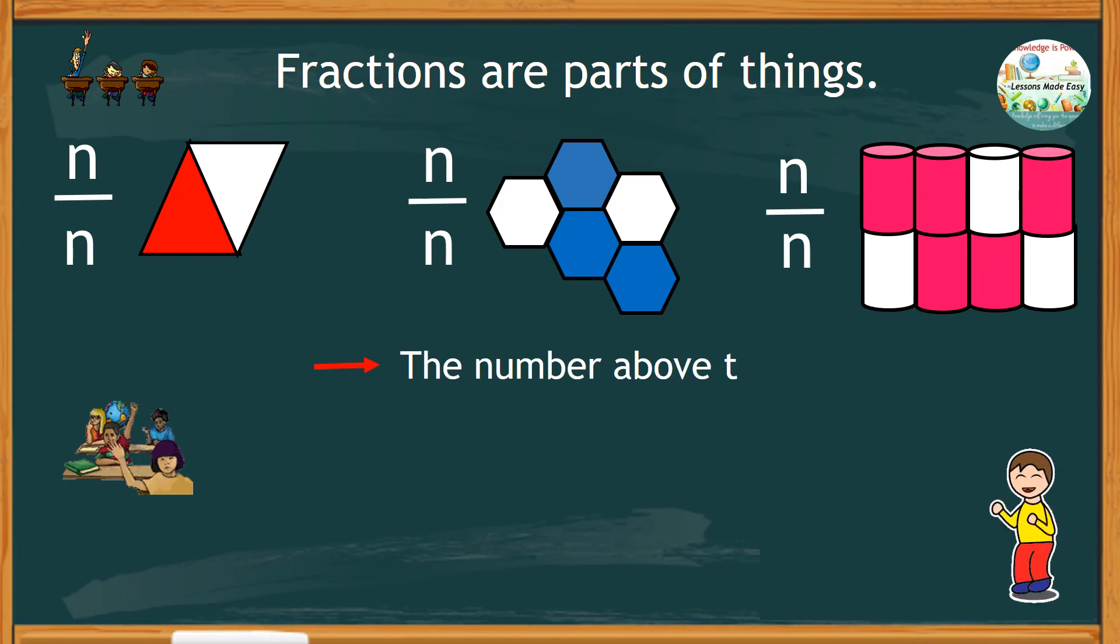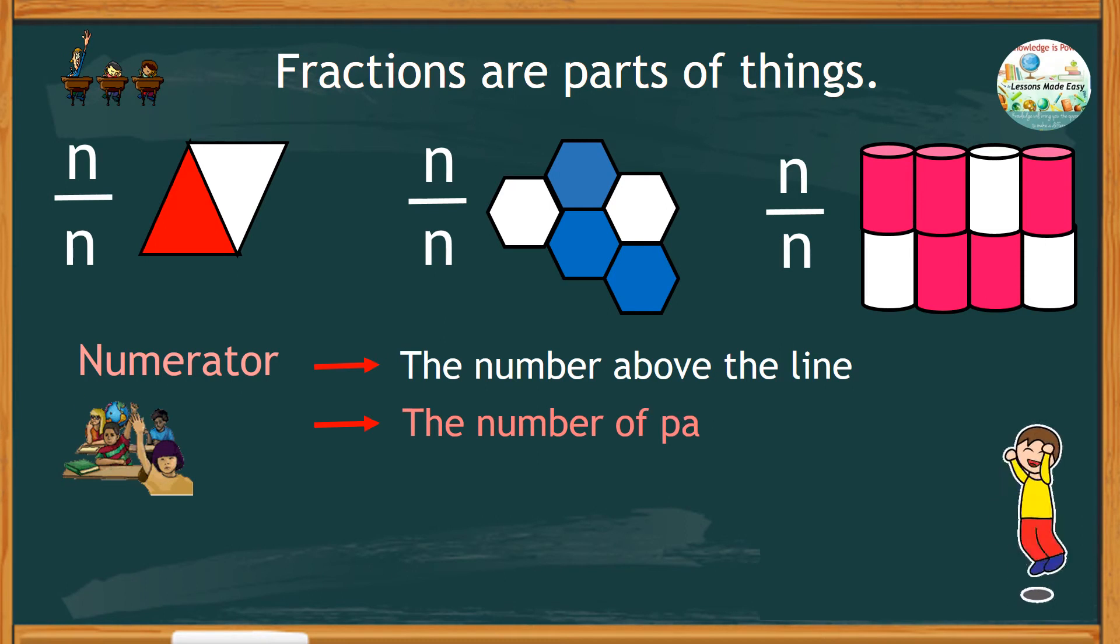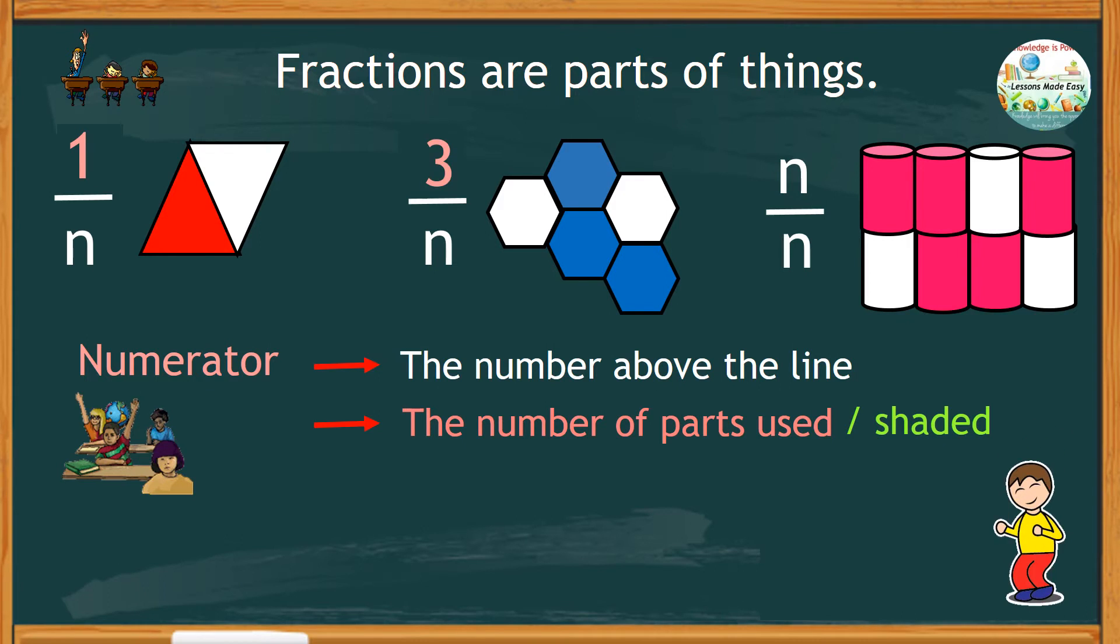The number above the line is called the numerator, and it tells the number of parts used or shaded. In the first picture, it shows one part shaded, three parts shaded in figure 2, and five parts in illustration 3.